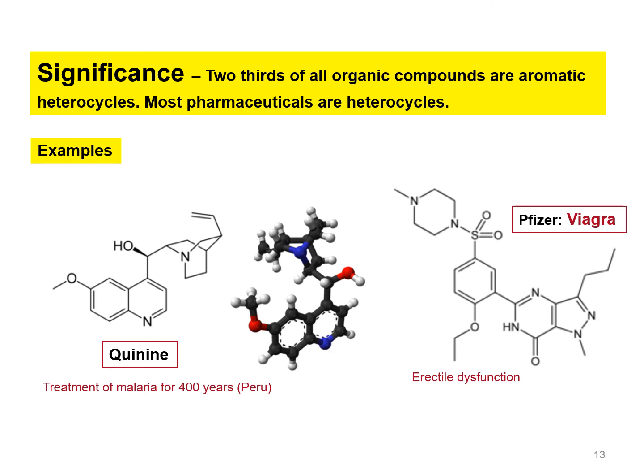Now I want to discuss about the significance of heterocyclic compounds. Heterocyclic compounds are very important to us because two-thirds of all organic compounds are aromatic heterocyclics, and most pharmaceuticals are heterocyclic compounds. That is why we have to know about heterocyclic compounds and their physicochemical properties.